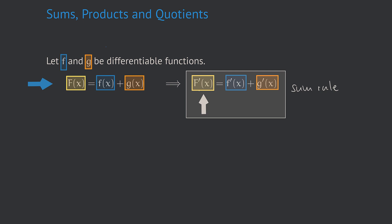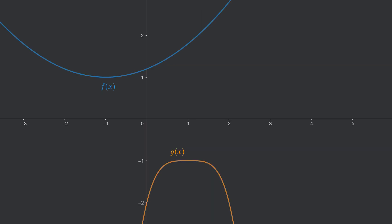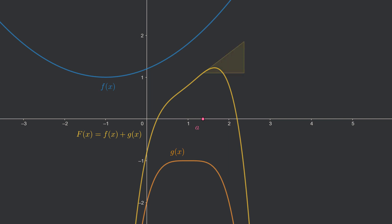Before we prove it, we want to verify the sum rule at a graphical example. Let us look at these two functions f and g. We then build a third function capital F as the sum of f and g. We now want to understand what the derivative of capital F is at some given point A. The derivative of capital F at point A is given as the slope of the tangent to F at point A. We can illustrate the tangent and its slope by drawing the slope triangle to capital F at the point A. For this position of A, we obtain a slope or a derivative of 0.75.